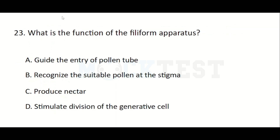What is the function of the filiform apparatus? Option A: Guide the entry of pollen tubes, Option B: Recognize suitable pollen at the stigma, Option C: Produce nectar, Option D: Stimulate division of the generative cell. The answer is Option A — guide the entry of pollen tubes.